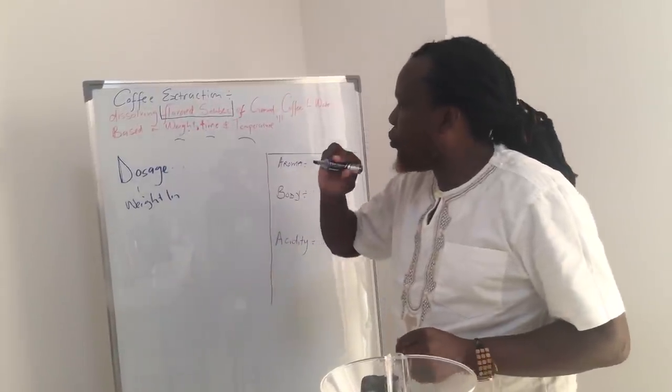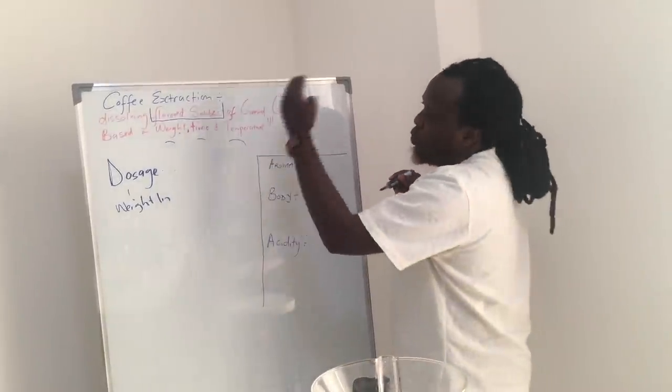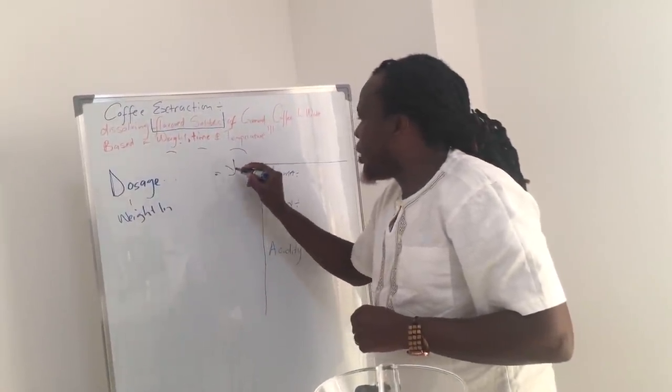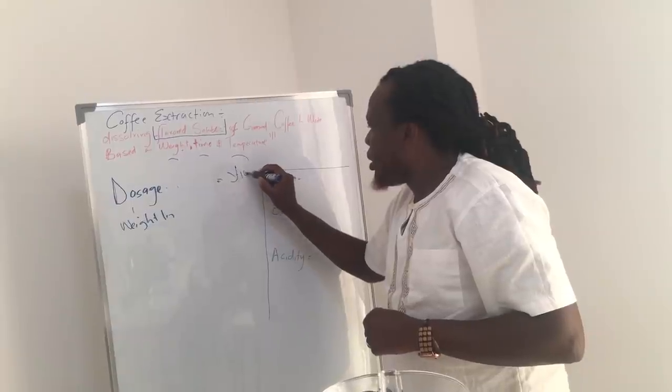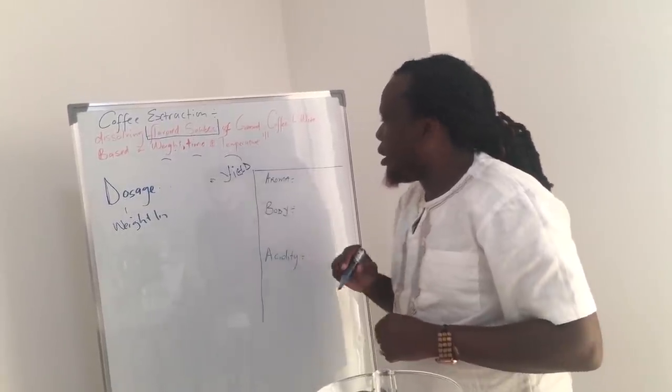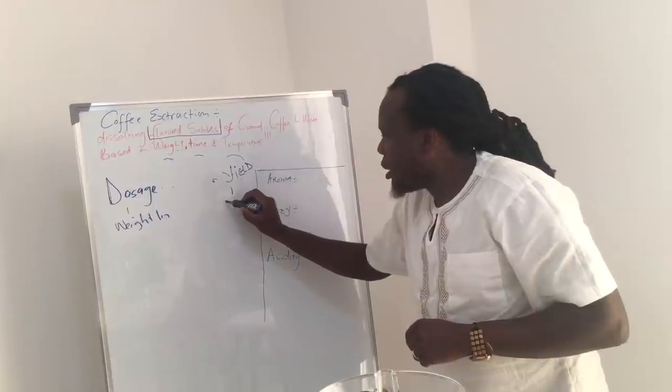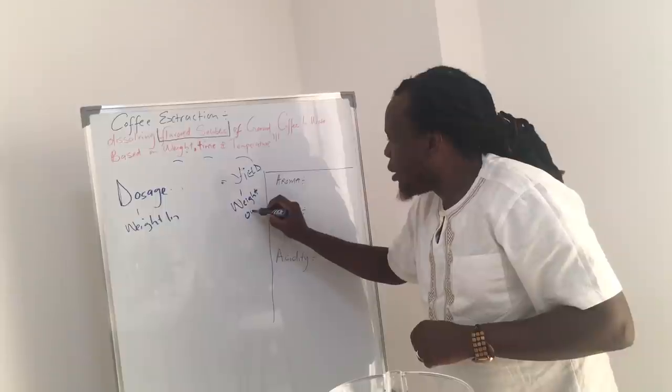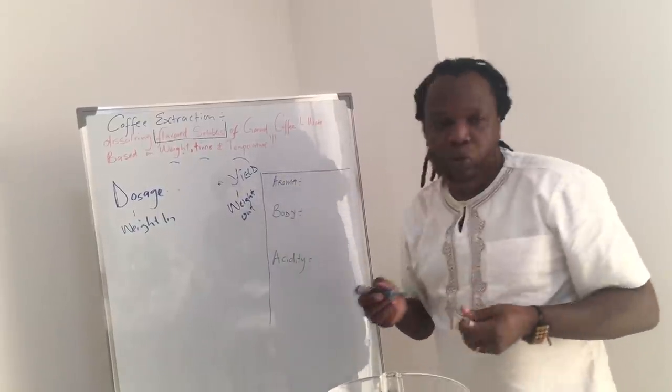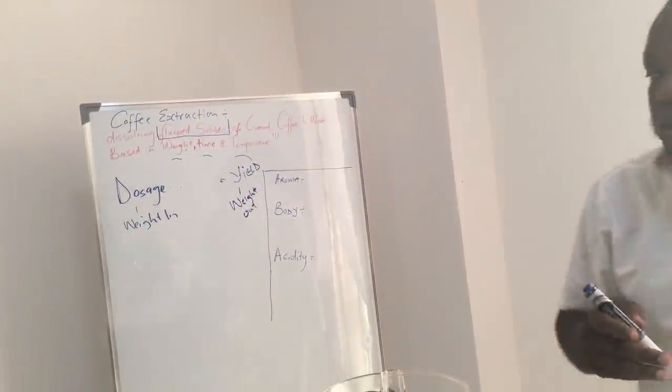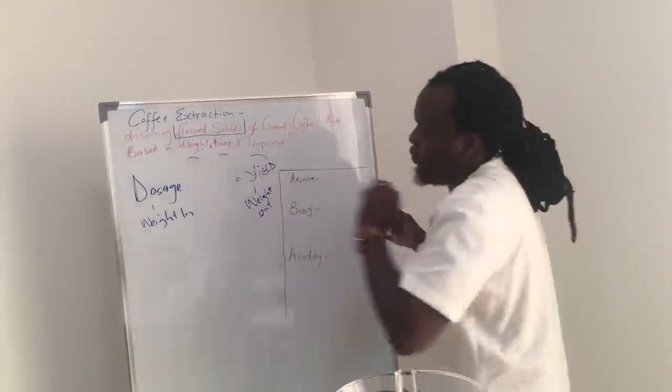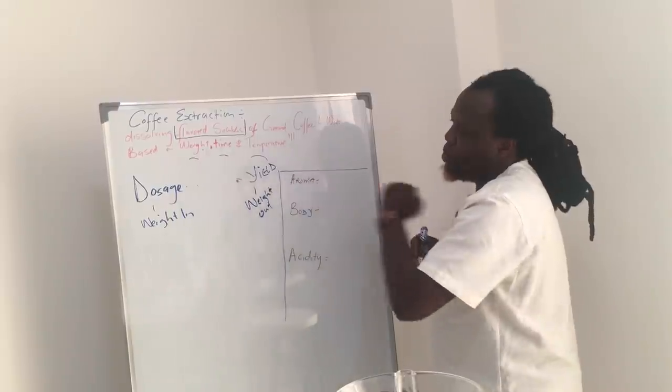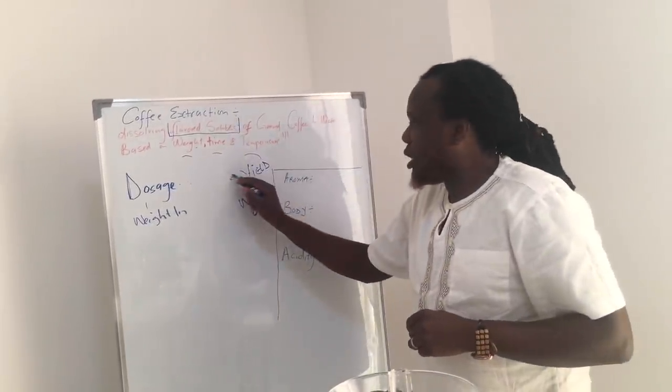We also, on that point of weight, we want to have also a weight out, which is the result, the resultant weight out, which is a yield. So in other ways, this is weight out. So in order for you to achieve the best results, we need to have a structure, to say, and to have a formula. So we have a dosage, which is a weight in, and a yield, which is weight out, which is the resultant.